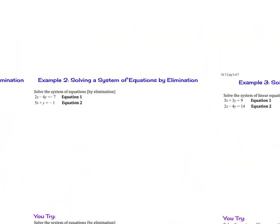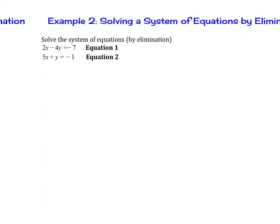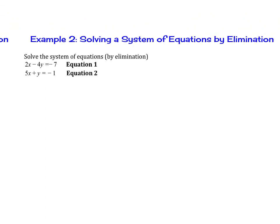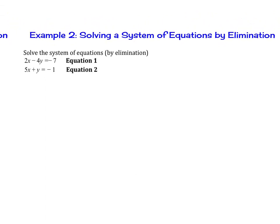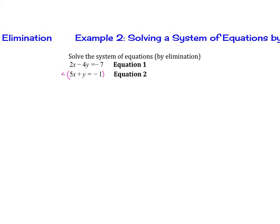Let's try Example 2: solving a system of equations by elimination. The first example was level 1 — you didn't have to multiply. Now in this second example, if we add the equations together directly, one variable will not cancel out. But we can change that. We have 2x and 5x, 4y and y. So if we multiply the second equation by positive 4, then the y terms will cancel. I'm going to multiply equation 2 by positive 4, which gives 20x plus 4y equals negative 4.